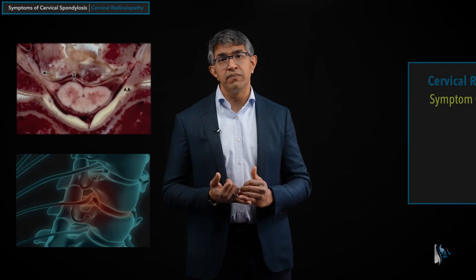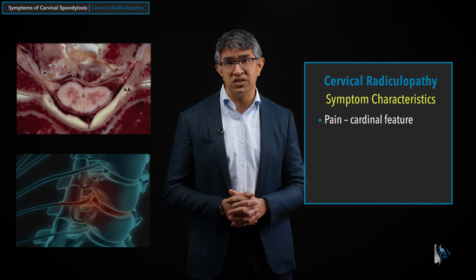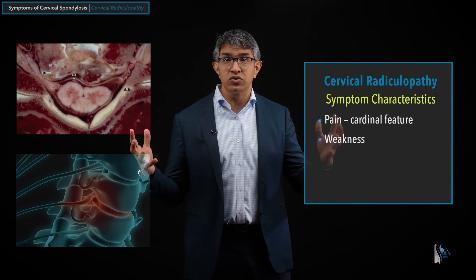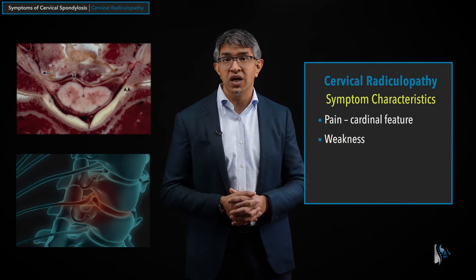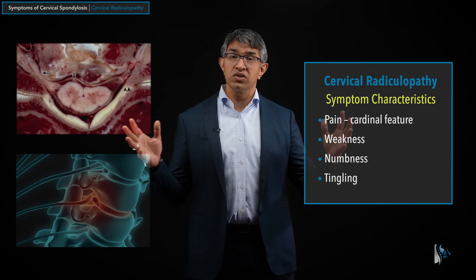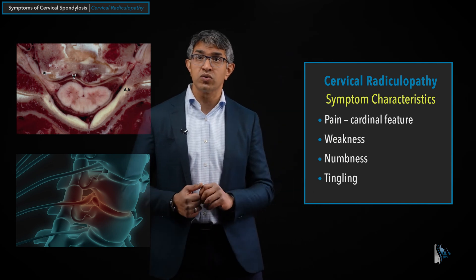Now let's talk about the symptoms people get with cervical radiculopathy. The classic symptom is pain — usually a shooting type of pain. Pain is the cardinal feature; in fact, if people do not have pain, you have to really question the diagnosis. In addition to pain, people can have weakness in whatever muscle groups are affected by that nerve, and numbness and tingling wherever that nerve goes. So the traditional symptoms are pain, weakness, numbness, and tingling.